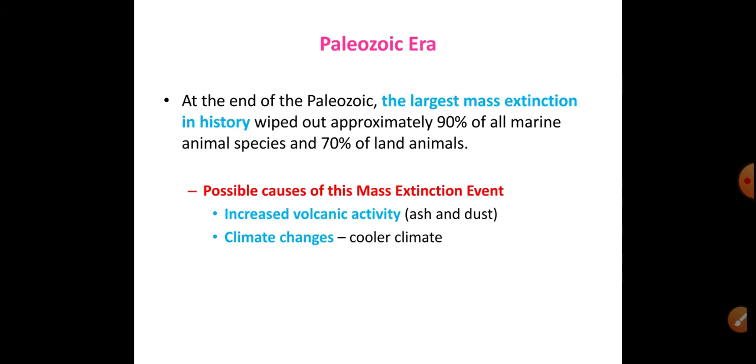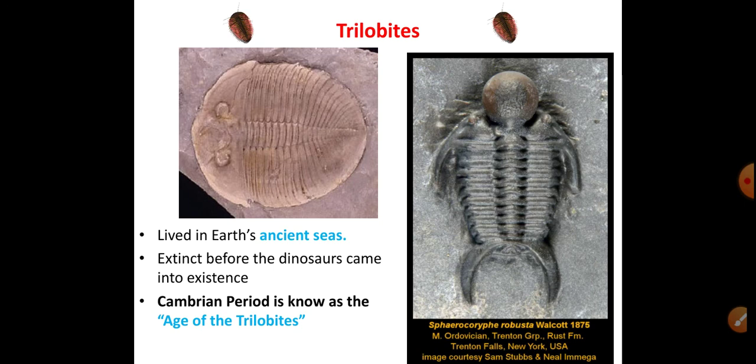The possible causes of this mass extinction event were: first, increased volcanic activity — too many volcanoes erupting, causing excessive heat, so animals that could not survive in high temperatures went extinct; and second, climatic change — a very cold climate prevailed, and organisms that could not withstand cold conditions perished.